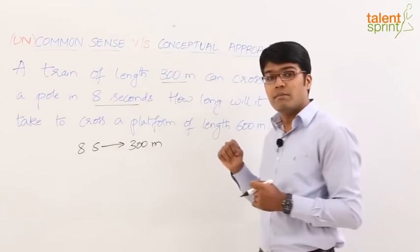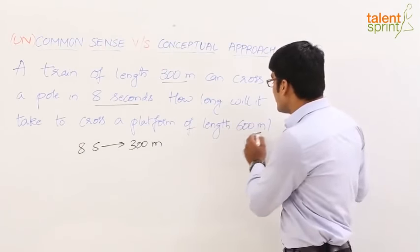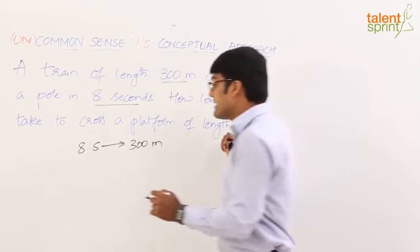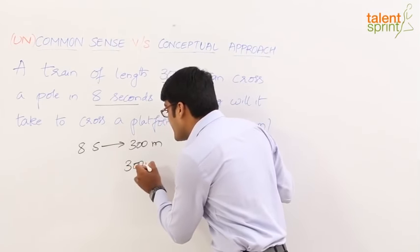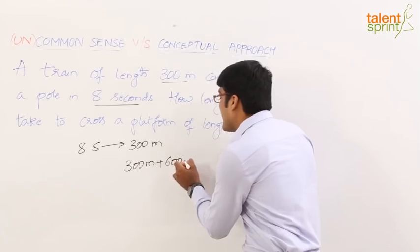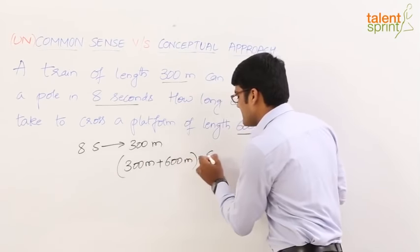What is the length of the train? 300 meters. And the length of the platform here is given as 600, which means in the second case, the train has to cover total 300 meters plus 600, that is 900 meters.